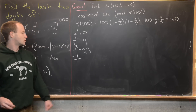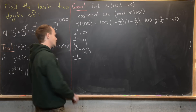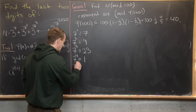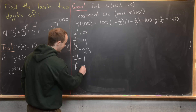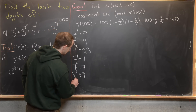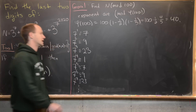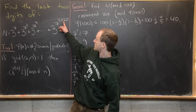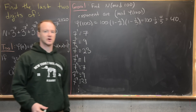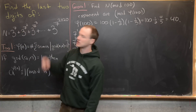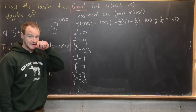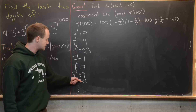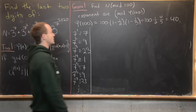Next, 7 to the fourth is 23 times 7, which equals 161, and that is congruent to 1 mod 40. This creates a nice loop: 7 to the fifth is congruent to 7, 7 to the sixth is congruent to 9, 7 to the seventh is congruent to 23, and so on — giving us the repeating cycle 7, 9, 23, 1.